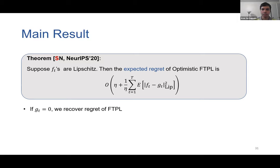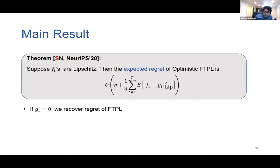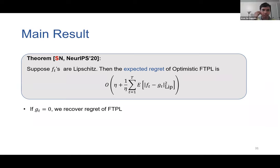Q: What norm are you measuring the error in? A: This is the Lipschitz norm — the Lipschitz constant of ft minus gt — because these are general functions. But it can be relaxed to other norms as well, like the L-infinity norm.